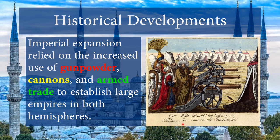Also, how do we finally stop the steppe nomads from invading many places? Gunpowder. Cannons. Guns. Just know that gunpowder technology, cannons, and protecting trade are very important. If you had to write an essay about how these empires were able to expand and maintain themselves, gunpowder technology is very important for that.